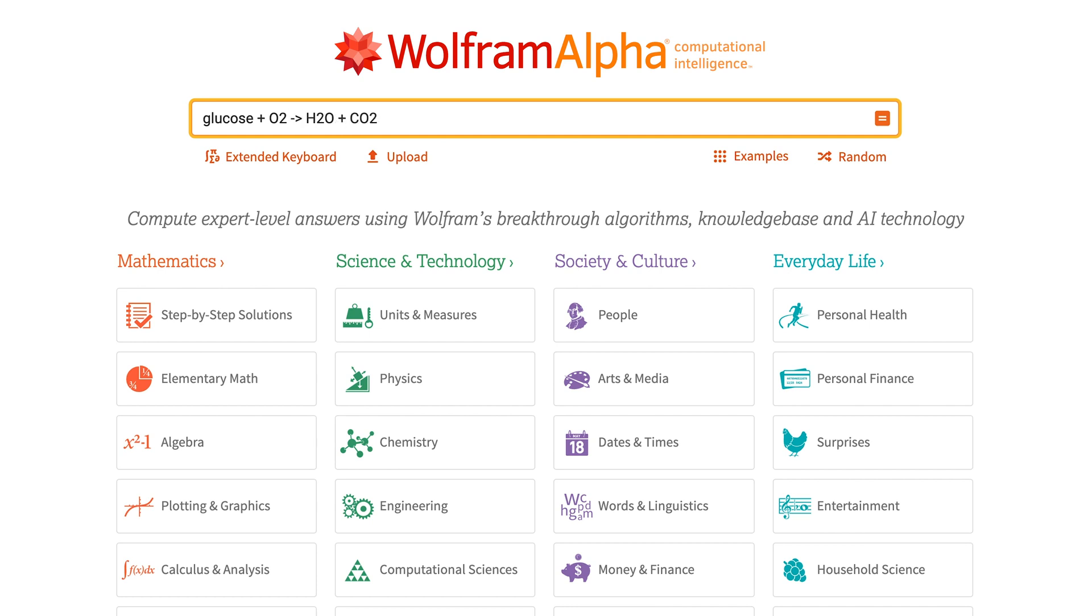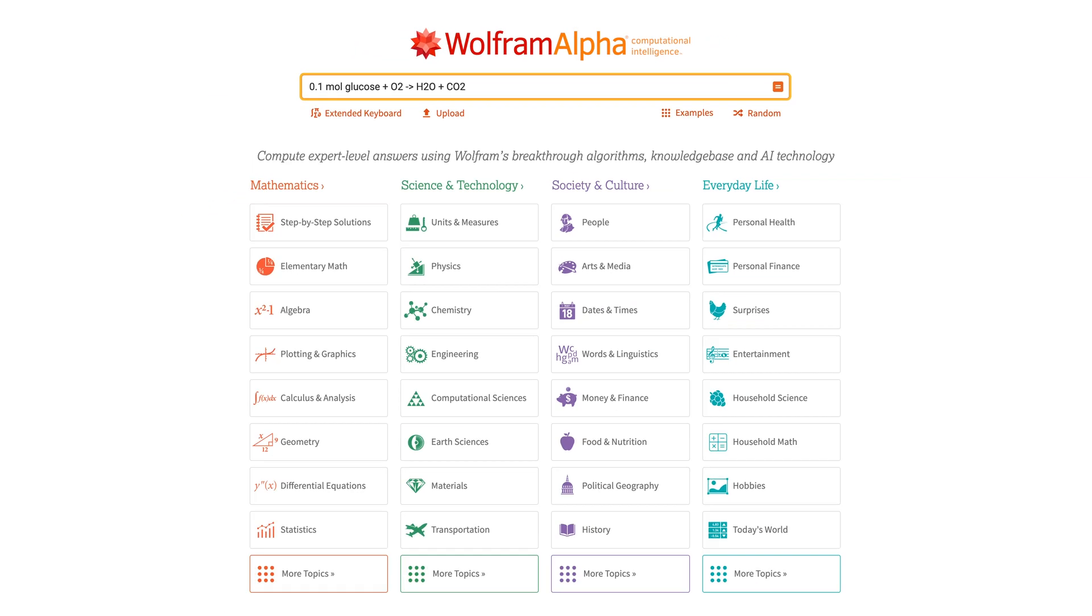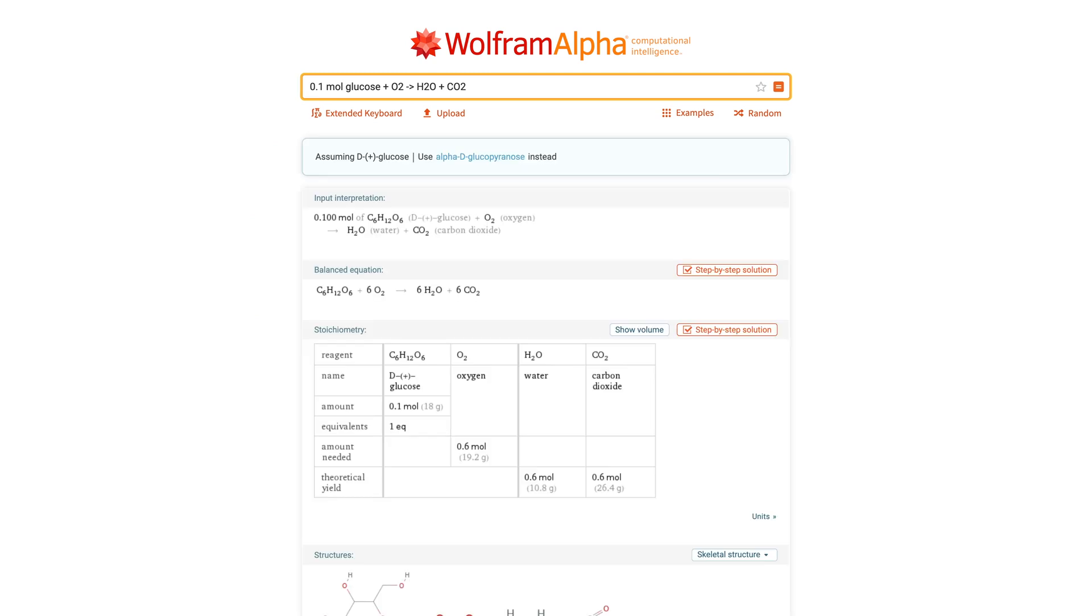Then provide the amount of one or more molecules in terms of mass or the number of moles. Now press Enter. Wolfram Alpha will compute the answer.